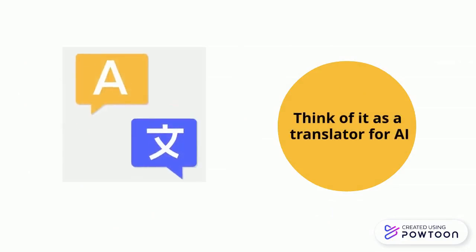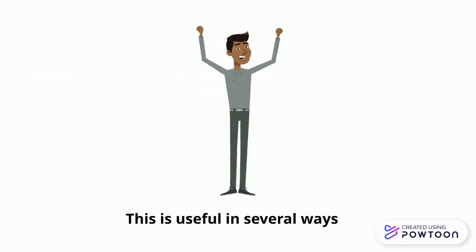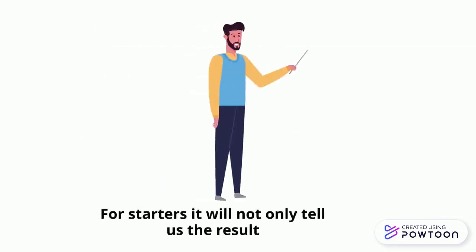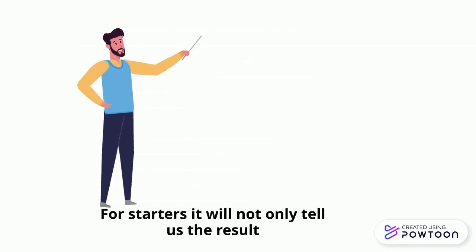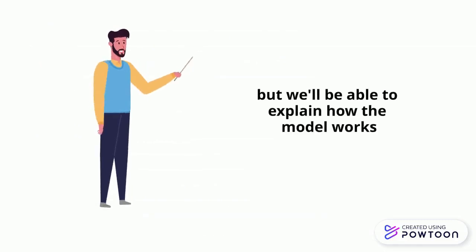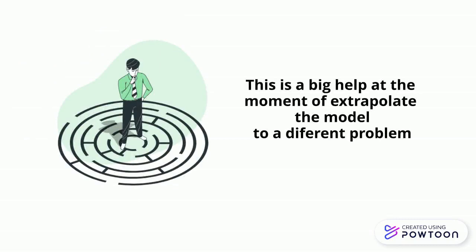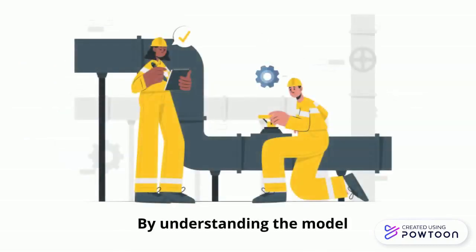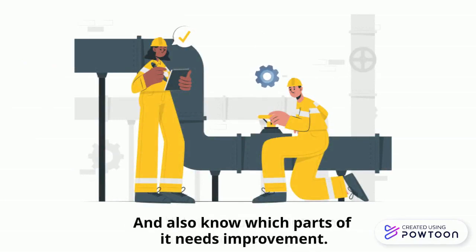Think of it as a translator for AI. This is useful in several ways. It will not only tell us a result, but will be able to explain how the model works. This is a big help when extrapolating the model to a different problem. By understanding the model, we will know how to determine when to use it again, and also know which parts of it need improvement.